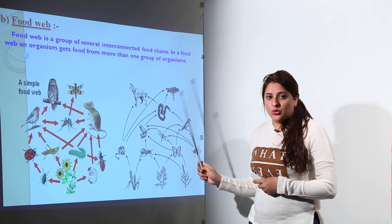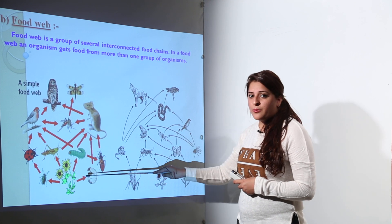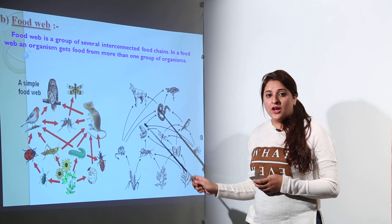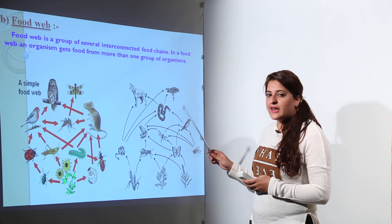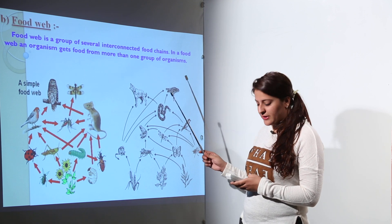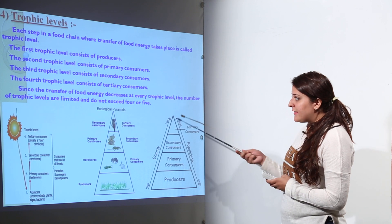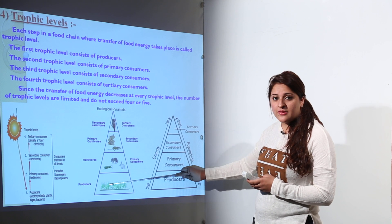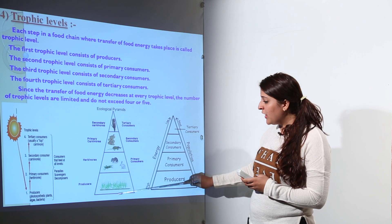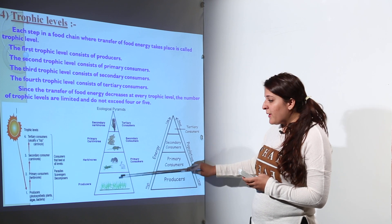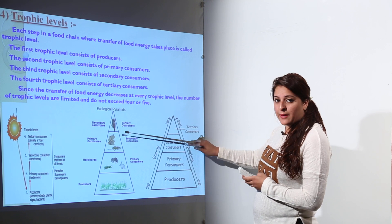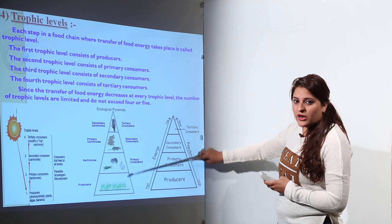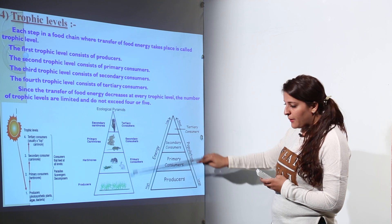In a food web, there are a large number of producers present at the first trophic level. The first trophic level is where producers lie; higher levels are the second, third, fourth, and so on. At the first trophic level, producers — green plants — synthesize food. They are acted upon by herbivores, then by primary and secondary carnivores. This structure is called an ecological pyramid because it takes the shape of a pyramid.